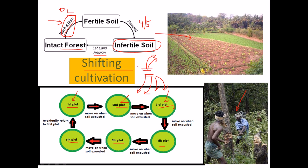That is all about shifting cultivation. Shifting cultivation is also known as jhumming cultivation, or jhum farming. I hope it will help you. Thank you.